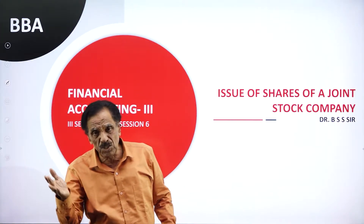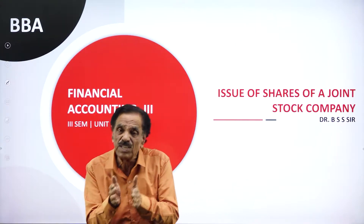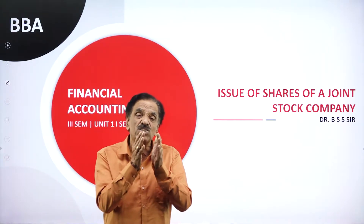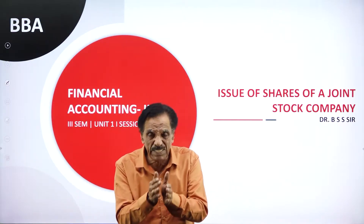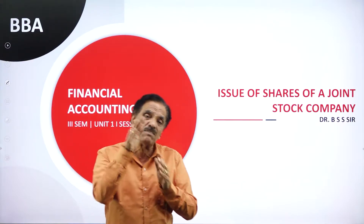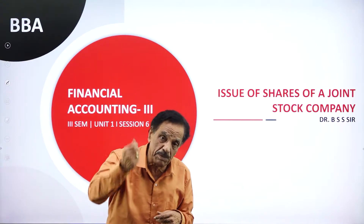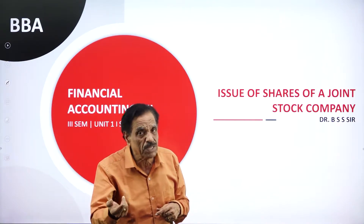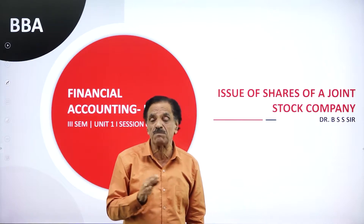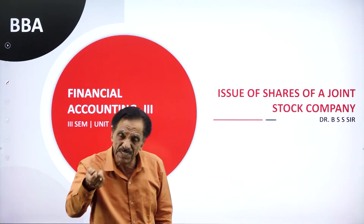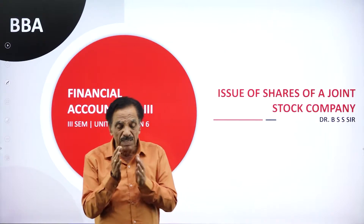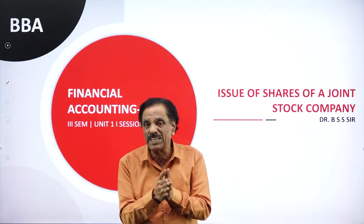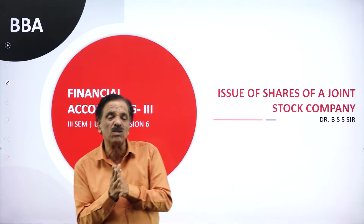In the last session we discussed how shares have been issued. Shares can be issued in three ways: share at a par, share at a discount, and share at a premium. Over subscription means receiving more applications than required shares; under subscription means receiving less applications than required shares. The regular entry for issue of shares is bank account debit to share application account.